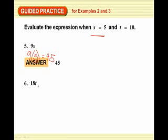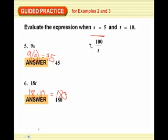18t, t is 10. So I go 18 times 10. Remember 10, that's easy. Just add a 0 on the end. Comes out to be 180. 100 divided by t. Well, t is 10. So that's going to be 100 divided by 10. How many times does 10 go into 100? 10 times. Basic facts.